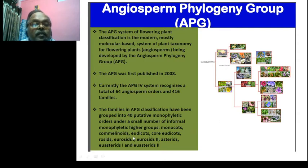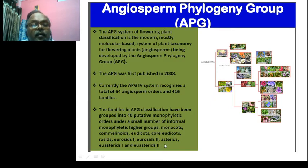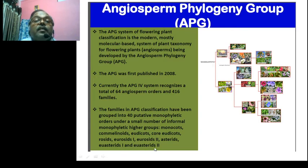These monophyletic groups include Commelinoids, Eudicots, Core Eudicots, Rosids, Eurosids I, Eurosids II, Asterids, and further eudicot subgroups.